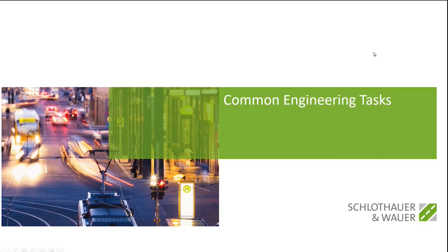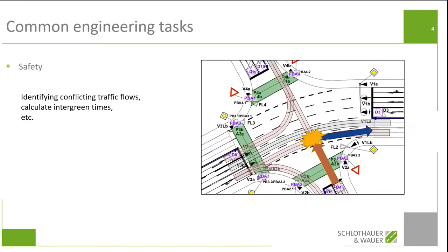So, common engineering tasks. This is really very basic — the whole presentation will not go too much into detail; it's more of a philosophical approach. Something that we can all agree on is that we have to take care of safety. If we're designing a traffic light, we have to identify conflicting traffic flows, calculate intergreen times, see what signals can go together and which cannot, and make sure we find the safest solution possible within the given parameters.